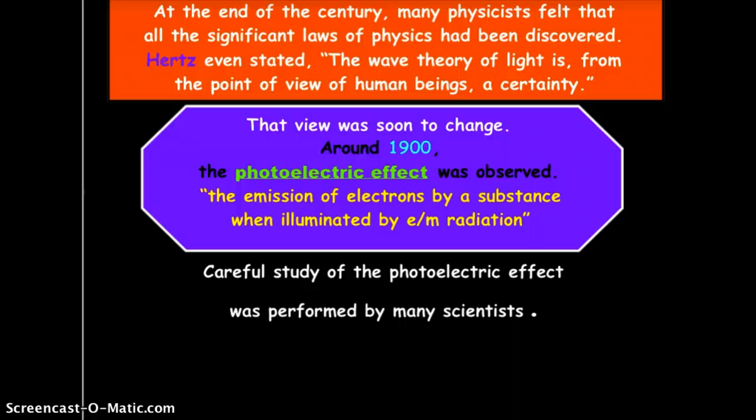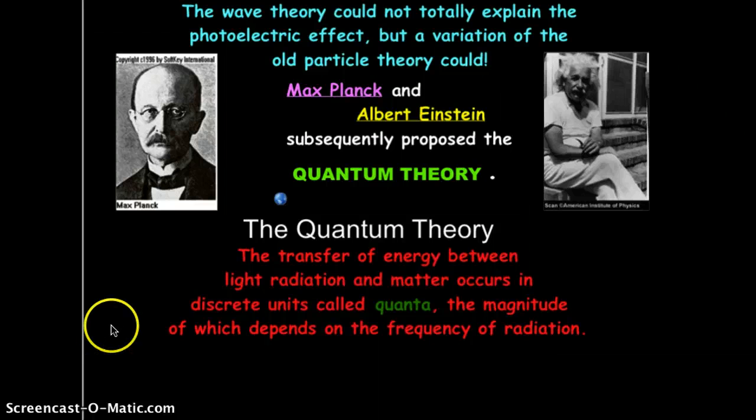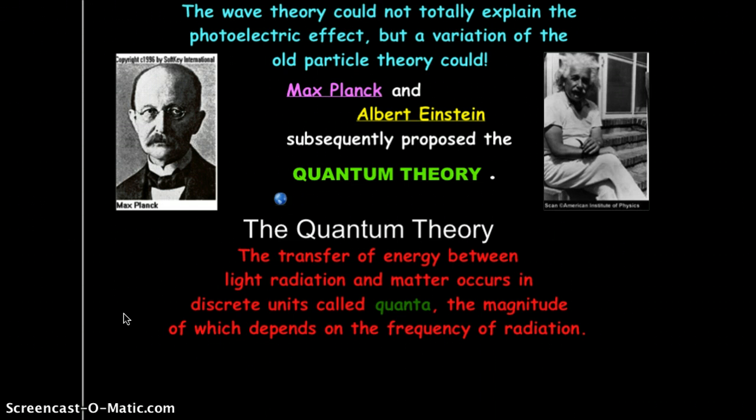Now, careful study of the photoelectric effect was formed by many scientists, but it wasn't until our friend Albert Einstein and Max Planck put this all together in what we now look at as quantum theory. And the quantum theory is basically the transfer of energy between light radiation and matter occurs in very discrete units called quanta. And remember, in a previous video, we talked about a quantum is the amount of energy it takes to move an electron up or down an energy level in the atom. And that the magnitude of that quanta is dependent upon the frequency of the radiation. So, if there's a frequency, there has to be a wave.